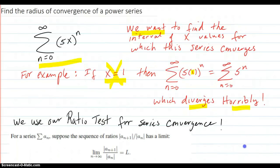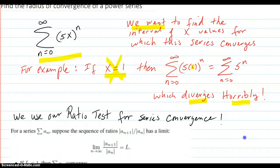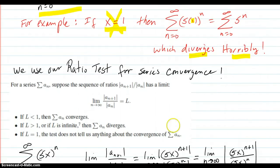So to find the values for which it does converge, we're going to use our ratio test.